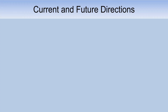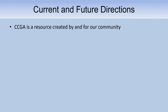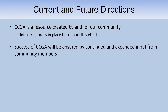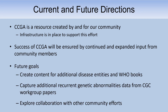So that's an overview of the site. Where are we and where are we going? The CCGA is a resource created by our community for our community, and the infrastructure is in place to support this effort. However, to be successful into the future we must have continued and expanded input from community members. Future goals include creating content for additional disease entities and other WHO books, capturing recurrent genetic abnormalities from CGC workgroup papers, and exploring collaboration with other community efforts.